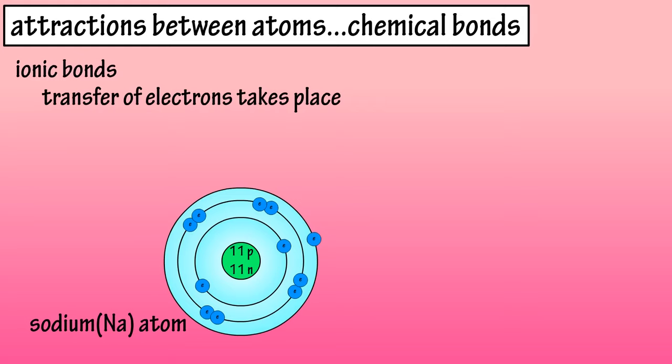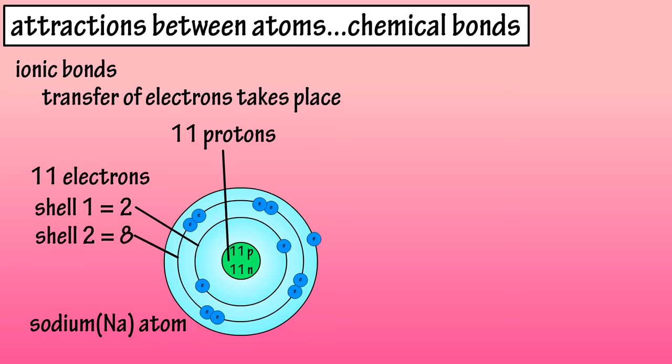Here we have a sodium atom, which has an atomic number of 11, meaning it has 11 protons in its nucleus and 11 electrons in its shells or energy levels. Shell 1 has 2 electrons, shell 2 has 8 electrons, and shell 3 has 1 electron.